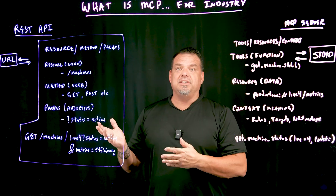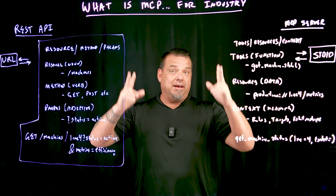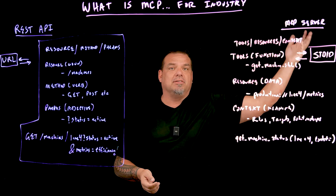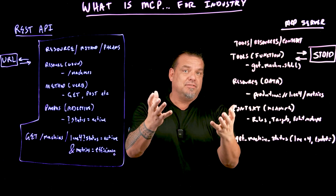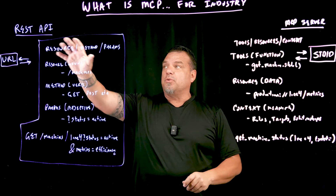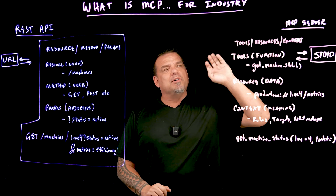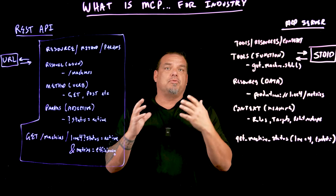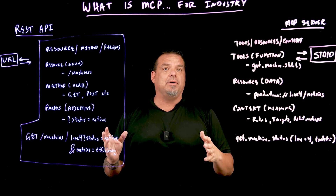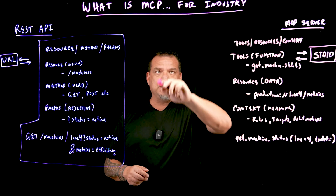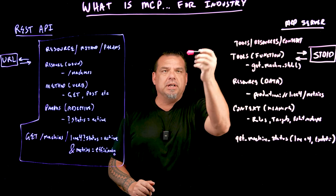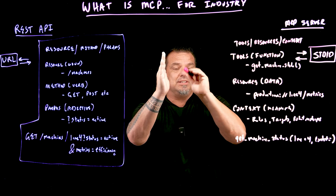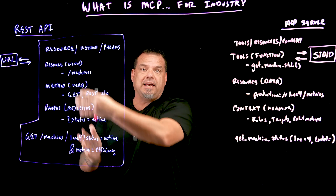There's been a lot of announcements. Last week at ICC, Inductive Automation said they're going to have an MCP module in Ignition. You might know that MCP is Model Context Protocol, which is basically an API for agentic AI — it's an API for agents. REST API is an API for human beings, but most of you probably don't understand what 'supporting MCP' actually means.